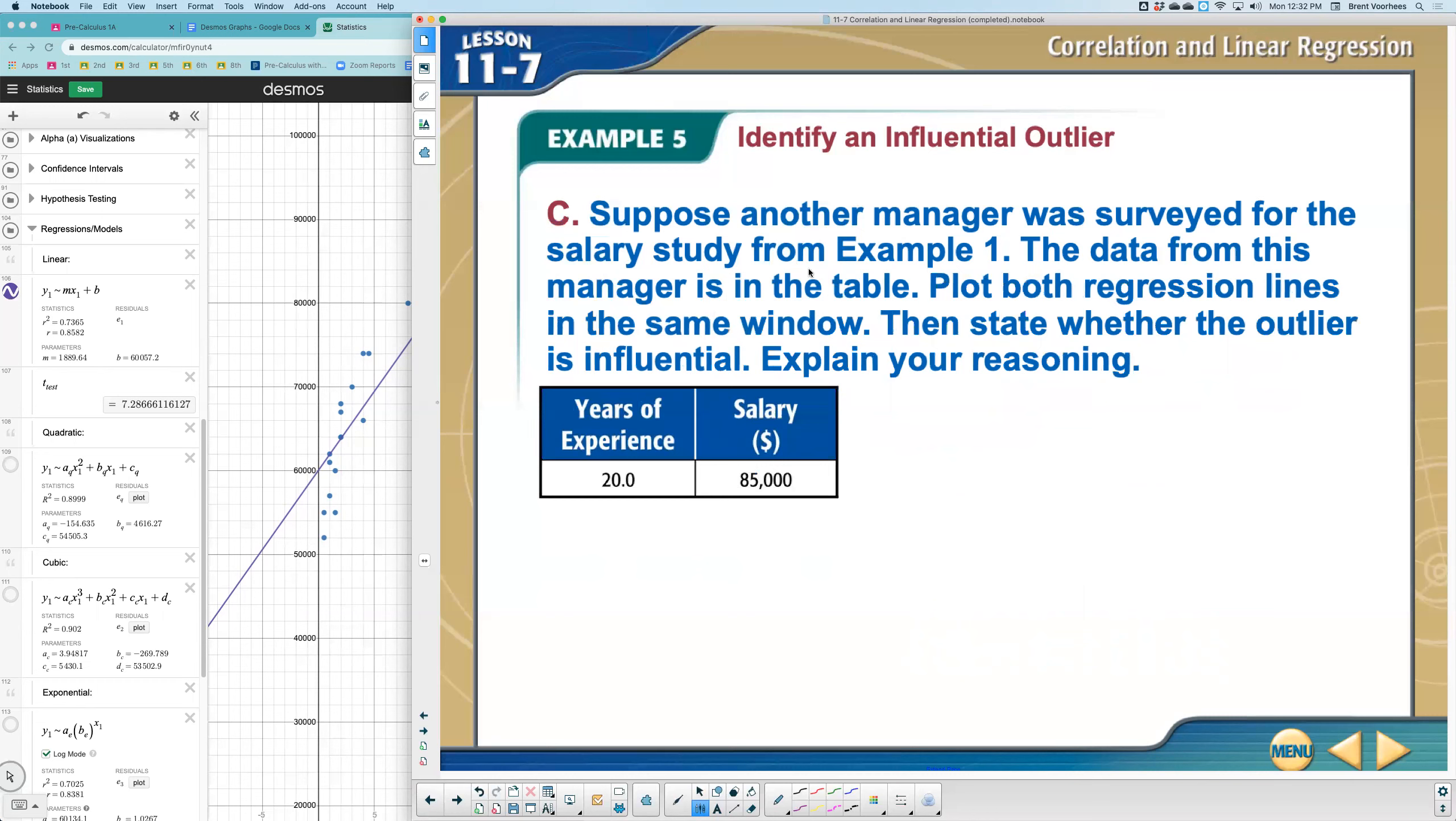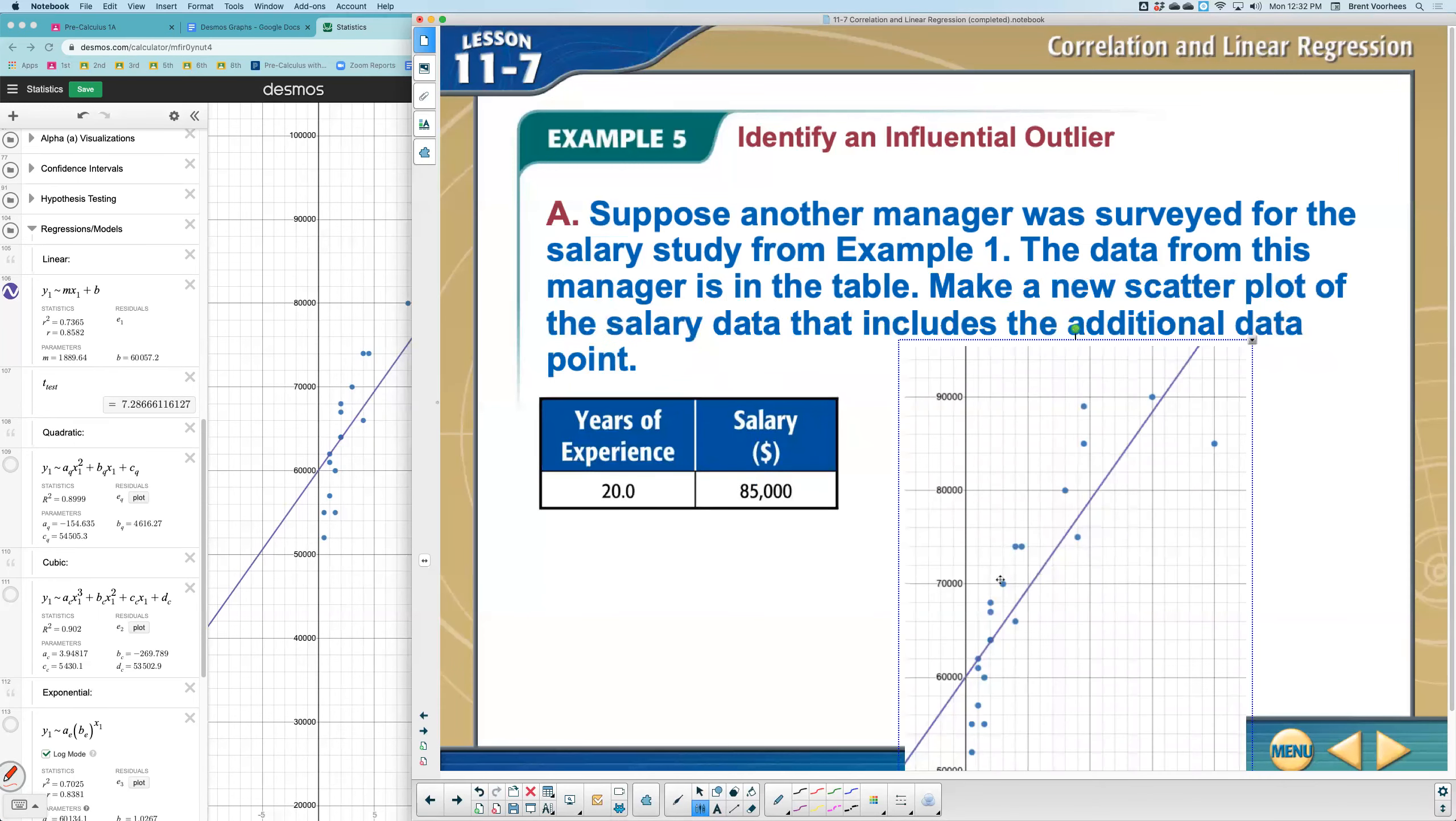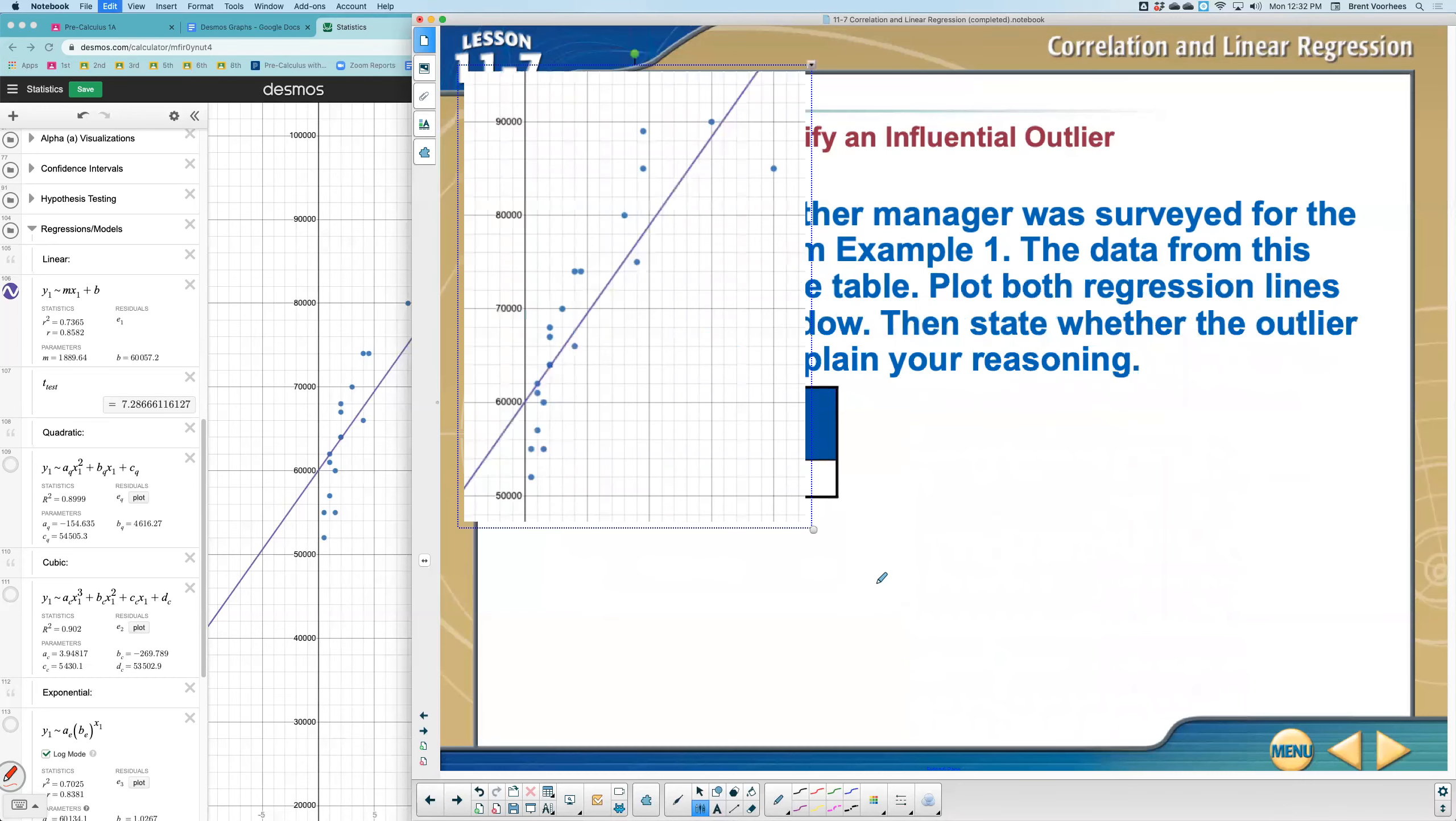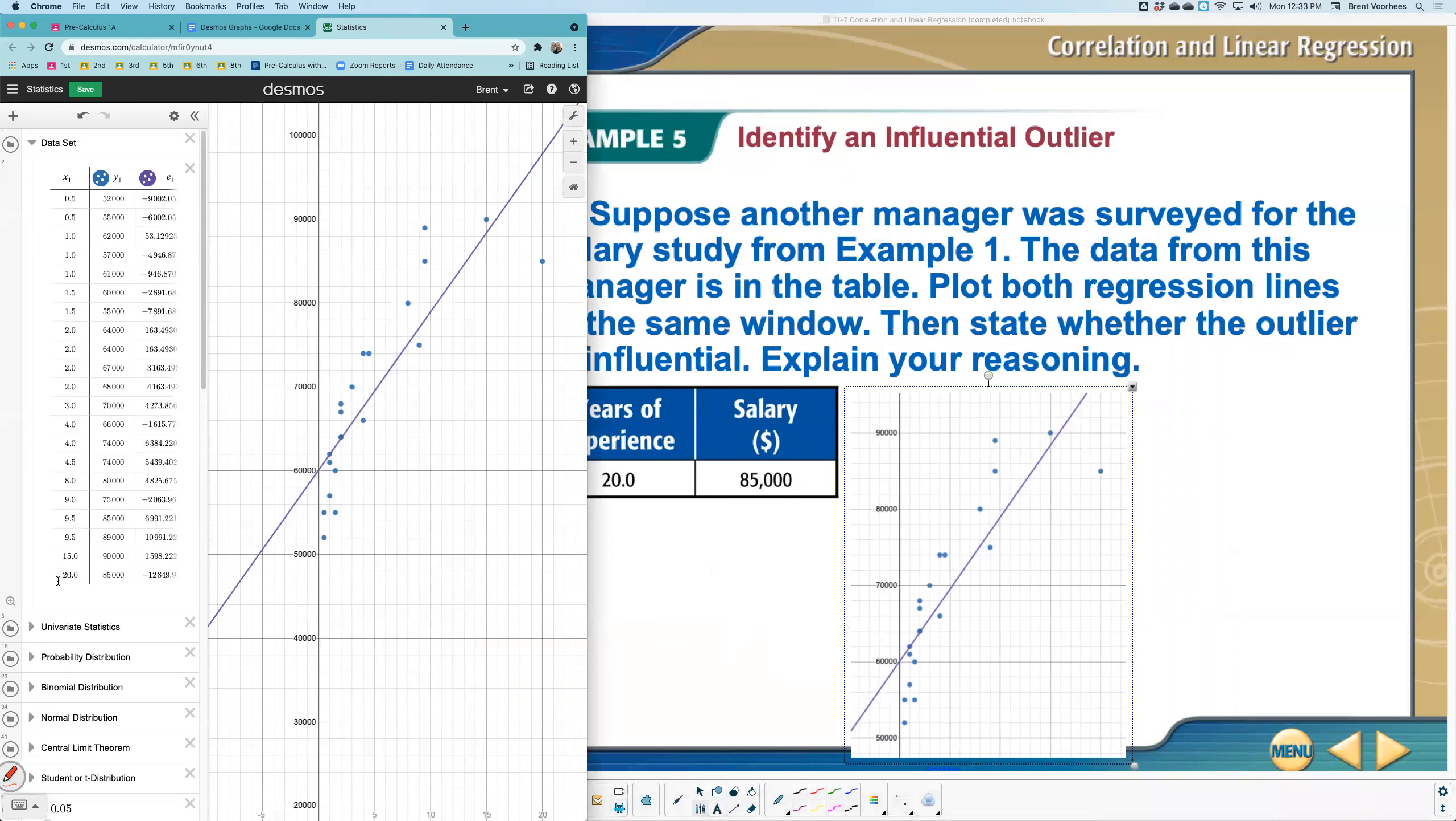It says plot both the regression lines in the same window. So we want to compare them and state whether or not that outlier is influential. So we've seen one. Let me go ahead and grab the previous picture that we had. So I'm going to grab this. And now we're going to compare this with the same picture, but without that last point. So let me just take this one point off.